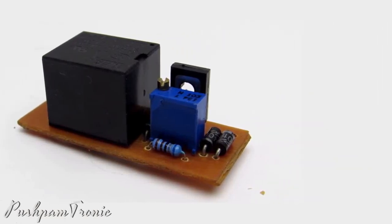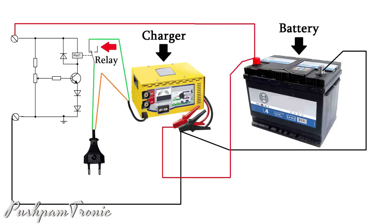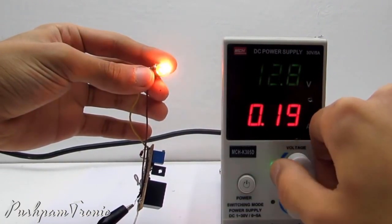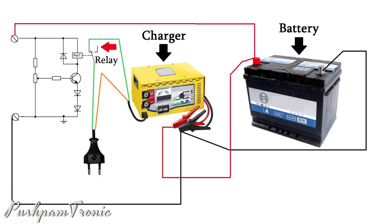Hi friends, today we will examine some universal schemes that will turn off the charger when the battery is fully charged. In other words, with these schemes you can build an automatic battery charger.